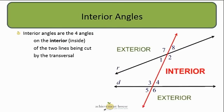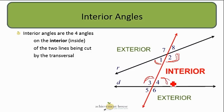The interior angles are the four angles that are on the inside of the two lines that are being crossed by the transversal. For example, angle one, angle two, angle three, and angle four — those are all interior because they are on the inside of the two lines that are cut by the transversal.